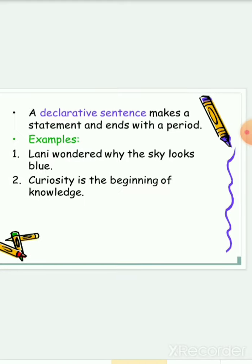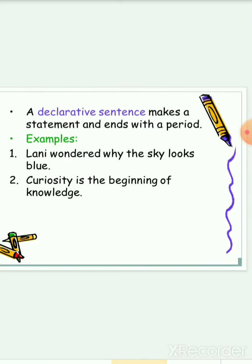Starting with a declarative sentence. A declarative sentence makes a statement, and it ends with a period. For example, Lanny wondered why the sky looks blue. Another example, curiosity is the beginning of knowledge. As you can see here in these two sentences, you have a statement, and it ends with a period.